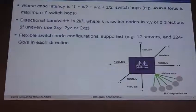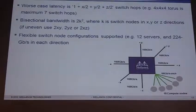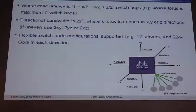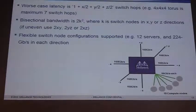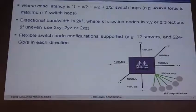Some of the network properties you'll want to calculate when building a 3D Taurus: worst-case latency is 1 plus the X-dimension number of nodes divided by 2, plus Y-dimension divided by 2, plus Z-dimension divided by 2. That's the number of worst-case switch hops from any server to any server. For example, a 4x4x4 Taurus has a maximum of seven switch hops: two plus two plus two plus one.